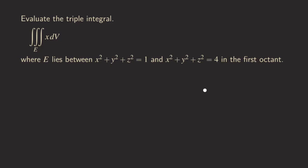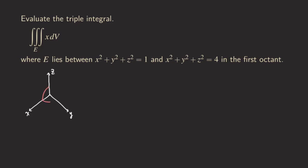The first thing we should do is see what this region looks like. We're going to start by drawing a rough sketch — it will be rough because it's hard to draw. This is the portion of the sphere in the first octant.